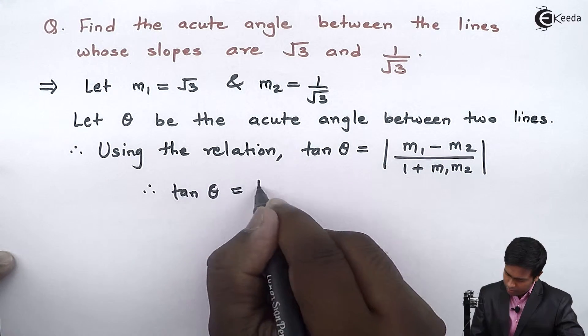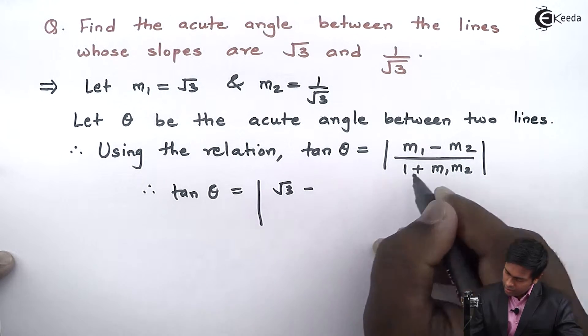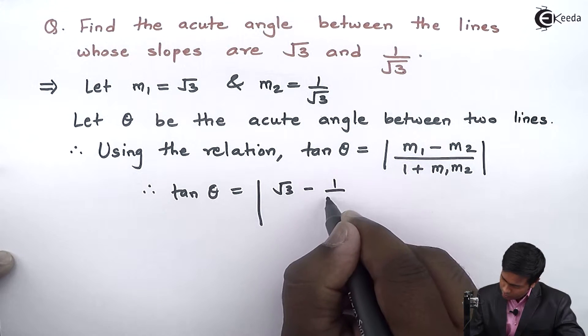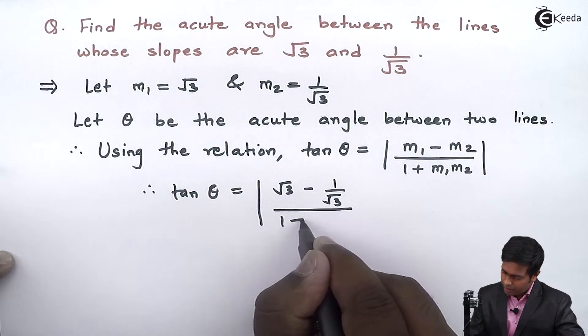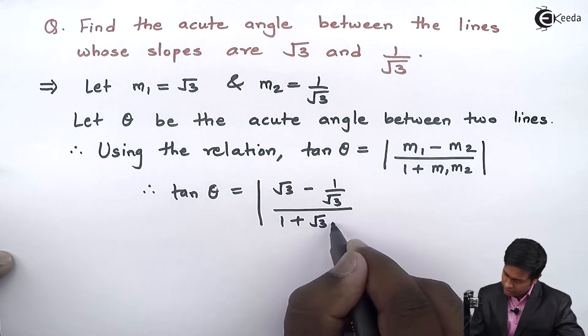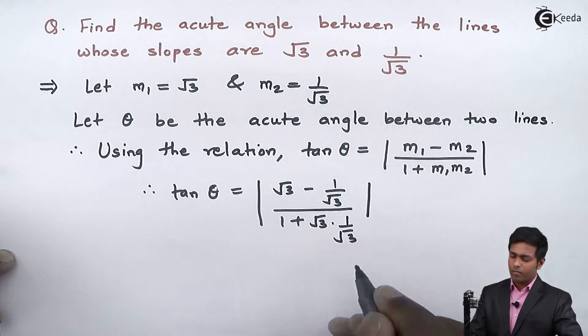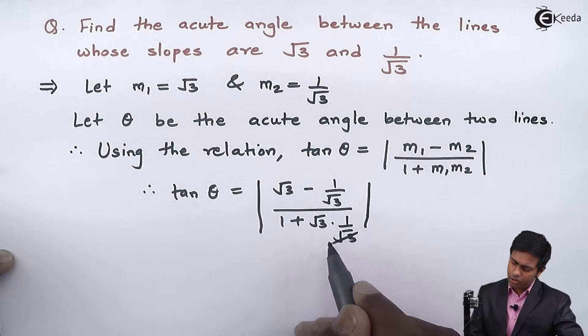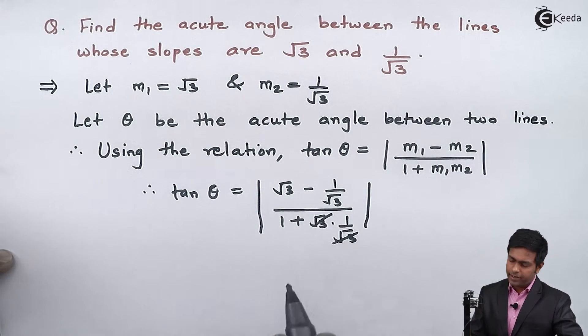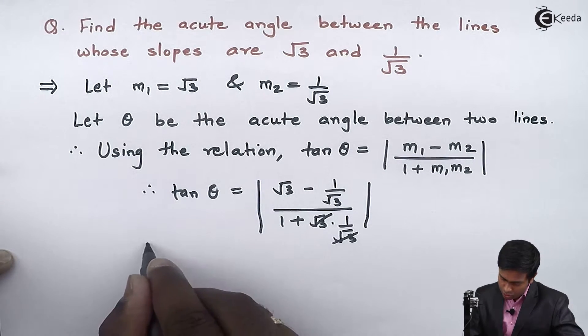tan θ = |√3 - 1/√3| / (1 + √3 × 1/√3). By canceling √3 in the denominator, we get 1 + 1 = 2 in the denominator.